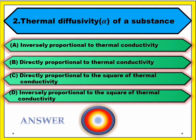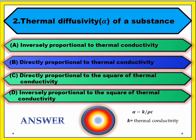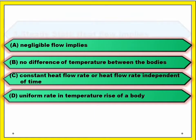Question number two: thermal diffusivity alpha of a substance. Answer: directly proportional to thermal conductivity. Alpha is equal to k divided by rho times c, where k is thermal conductivity.